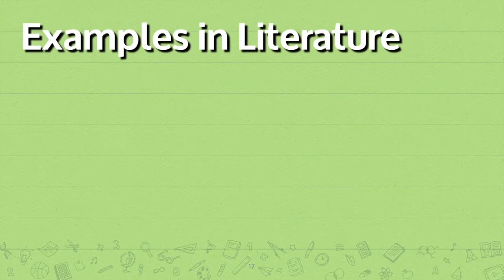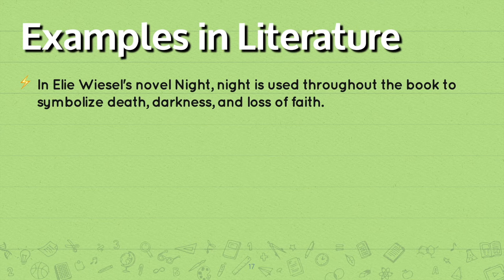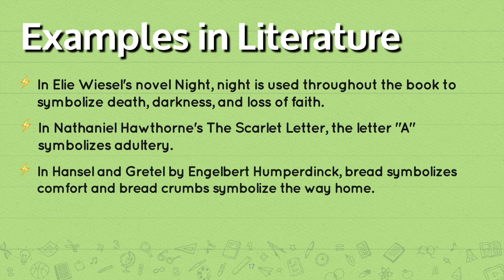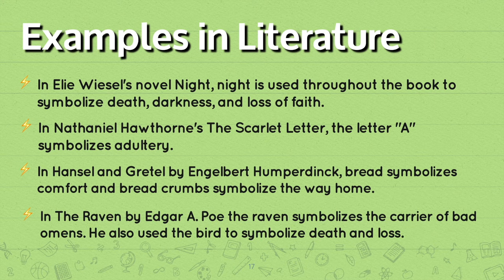Examples in literature. In Elie Wiesel's novel Night, night is used throughout the book to symbolize death, darkness, and loss of faith. In Nathaniel Hawthorne's The Scarlet Letter, the letter A symbolizes adultery. In Hansel and Gretel, bread symbolizes comfort and breadcrumbs symbolize the way home. In The Raven by Edgar Allan Poe, the raven symbolizes the carrier of bad omens — he also used the bird to symbolize death and loss.